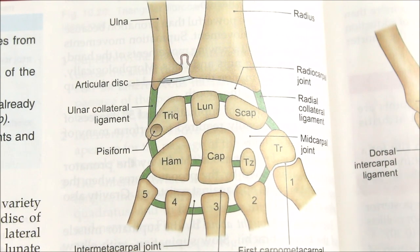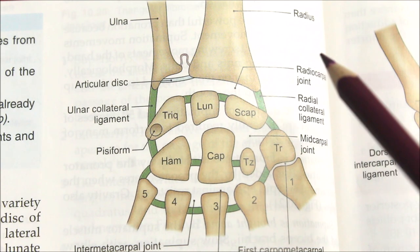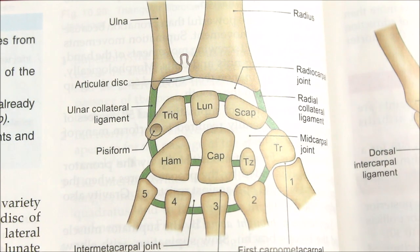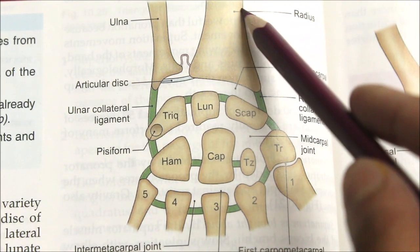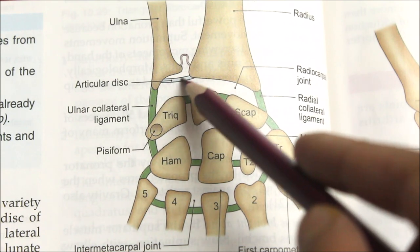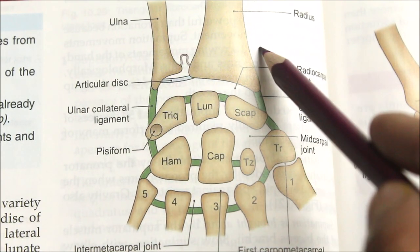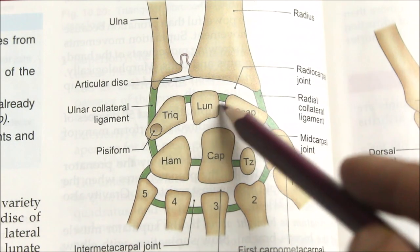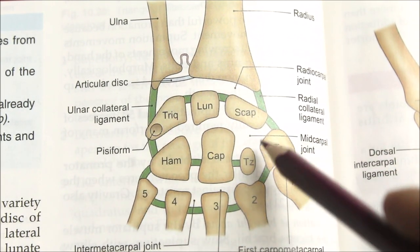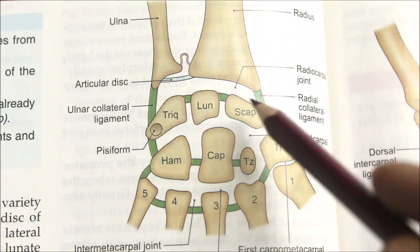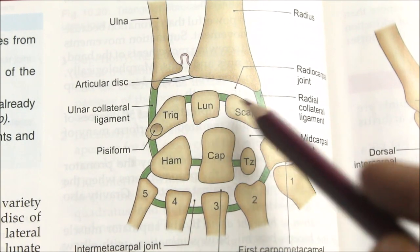The wrist joint is a synovial joint of ellipsoid variety that is formed between the lower end of the radius and the articular disc of the inferior radial ulna joint proximally, and three lateral bones of the proximal row of the carpal bones — that is the scaphoid, lunate and the triquetral — distally.